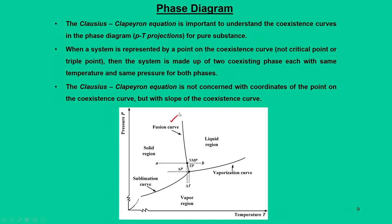Let us now see how the Clausius-Clapeyron equation is useful to study the phase diagram. The phase diagram consists of pressure-temperature projections with two distinct lines: the fusion curve (separating solid and liquid), the vaporization curve (separating liquid and vapor), and the sublimation curve (separating solid and vapor). The most important point is the triple point, where all three curves meet.